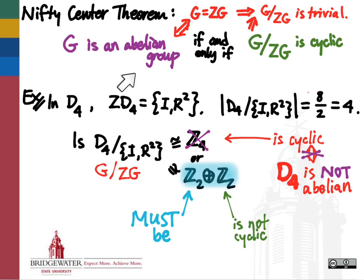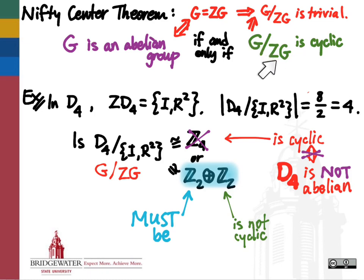So for any abelian group, if we take the quotient by the center, we know we're going to get a trivial group because the center is everything for an abelian group. But the fact that this goes the other way is what's interesting: the only case in which the quotient of a group by its center is a cyclic group is when g is abelian, and therefore this quotient is trivial. So the quotient of g by the center of g is only ever a trivial factor group or a non-cyclic factor group.